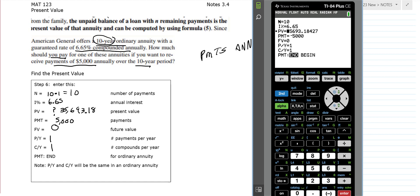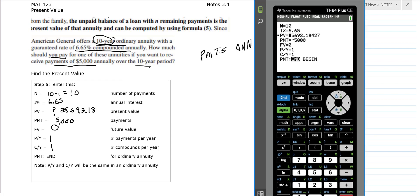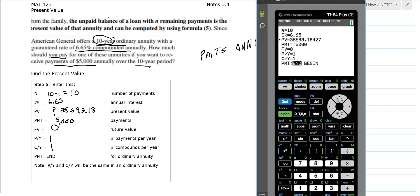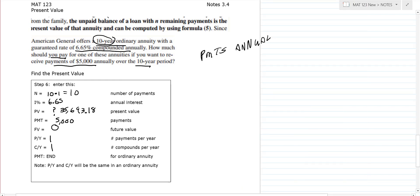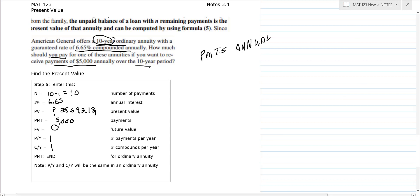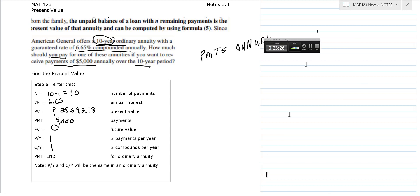The present value is where it starts, and it ends up going to zero as you receive the $5,000 annual payments — that's why the future value is zero. The TVM solver means you don't have to do all the algebra and arithmetic by hand. In this class we want students to know how to use the technology to solve these types of financial math problems.